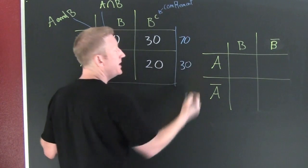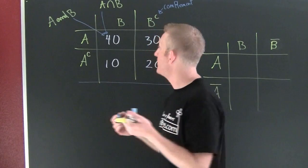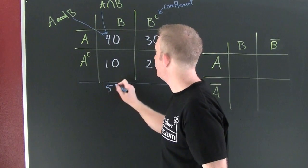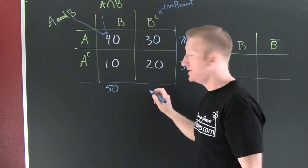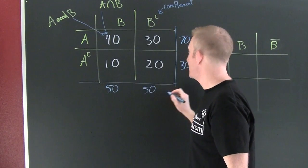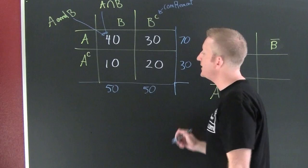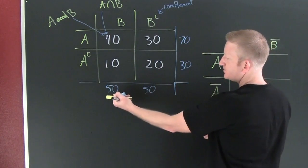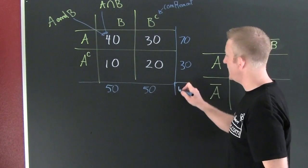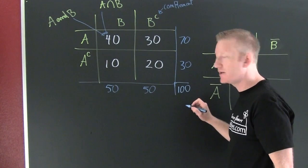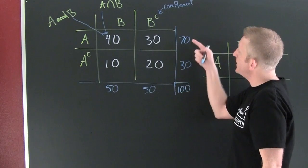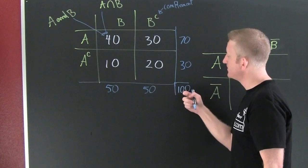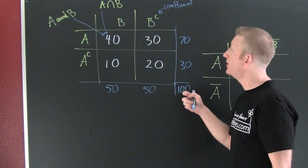Here we're going to have 30 things in A complement. But maybe we want to know how many things happened in event B. In event B, this is 50, and B not is 50. Let's look at our margins. A quick margin check would be to see 50 plus 50 is 100 total things occurred. And up here, 70 and 30, 100 total things occurred. Our margins are going to sum to the total number of things.